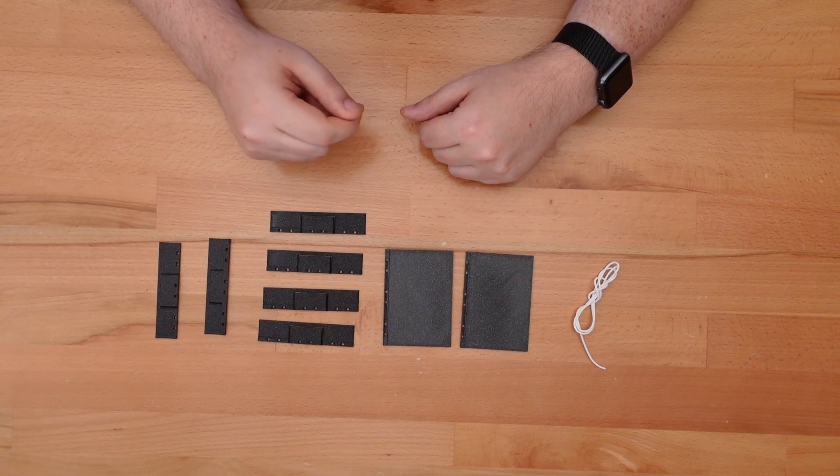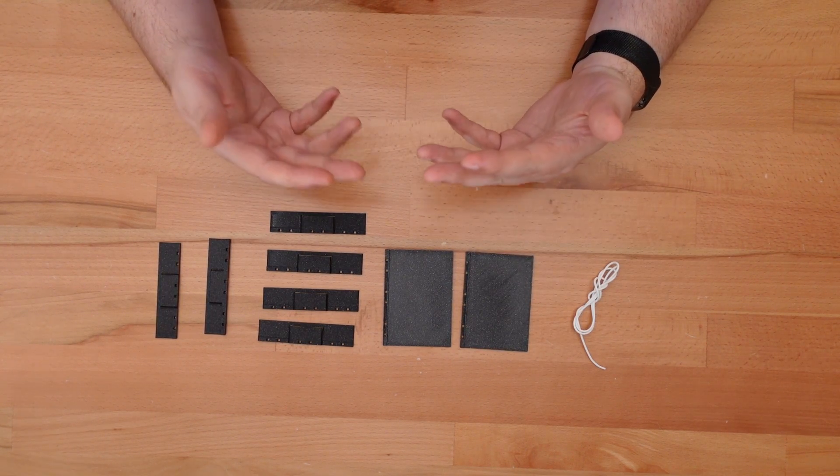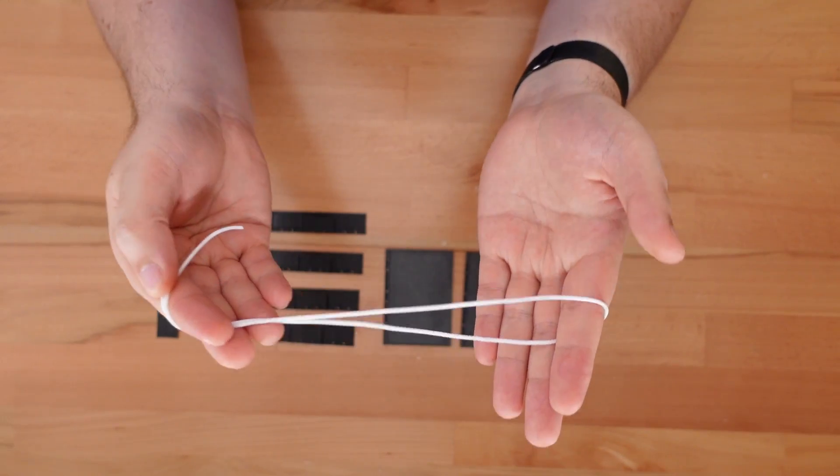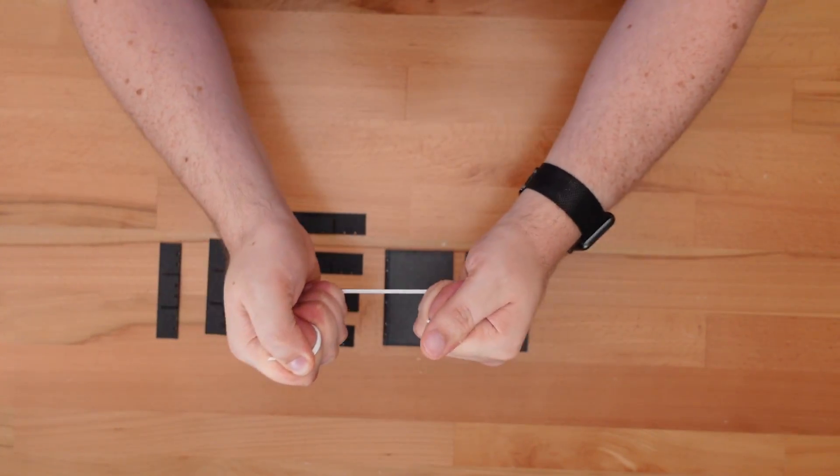To hold everything together you can use flexible TPU filament, sewing elastic, or extra strong thread. I'm going to use TPU because I have a lot of it on hand and it gives the book a nice springy feel.